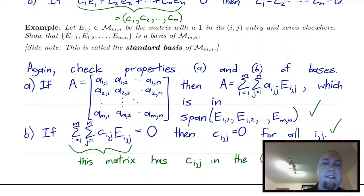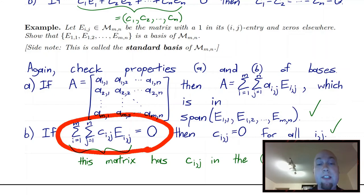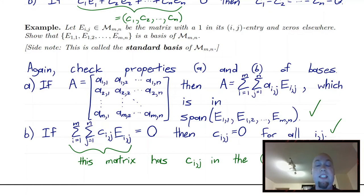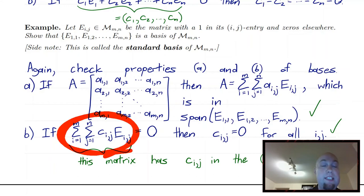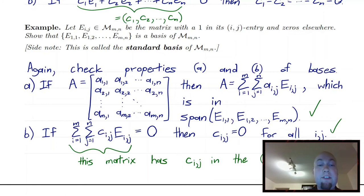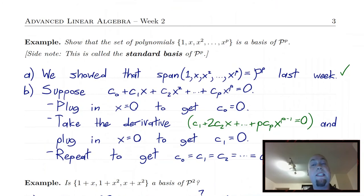For property b, we've got to check that this set is linearly independent. We set up a linear combination equal to the zero matrix — the zero vector in the vector space of matrices — and our goal is that the only solution has all C_ij's equal to zero. The reason this is true is that the linear combination just has C_ij in its IJ-th entry; if that equals the zero matrix, then all those entries have to be zero. So yes, it's linearly independent, again almost directly from the definition. We call that the standard basis of the vector space of matrices.